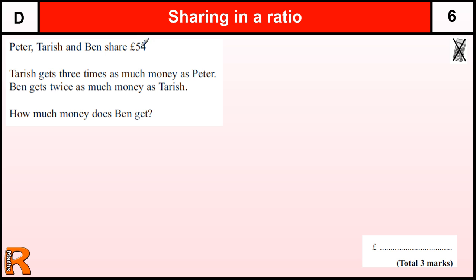So we're going to share out this £54 between these three people and we know that Tarish gets three times what Peter gets and Ben gets twice as much as Tarish.